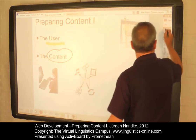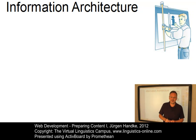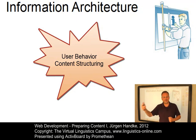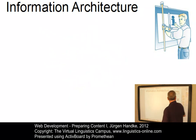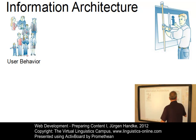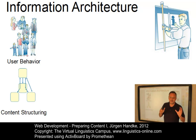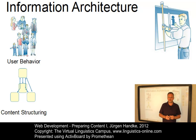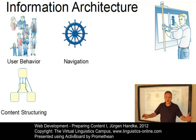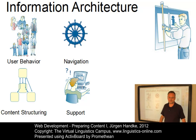The term information architecture incorporates two major aspects: user behavior on the one hand, and content structuring on the other. Whereas user behavior addresses the strategies and principles with which users navigate through the web, content structuring deals with various schemes of content organization depending on the nature of the content. This includes the principles of navigation and the use of support systems in order to avoid the 'lost in hyperspace' effect.